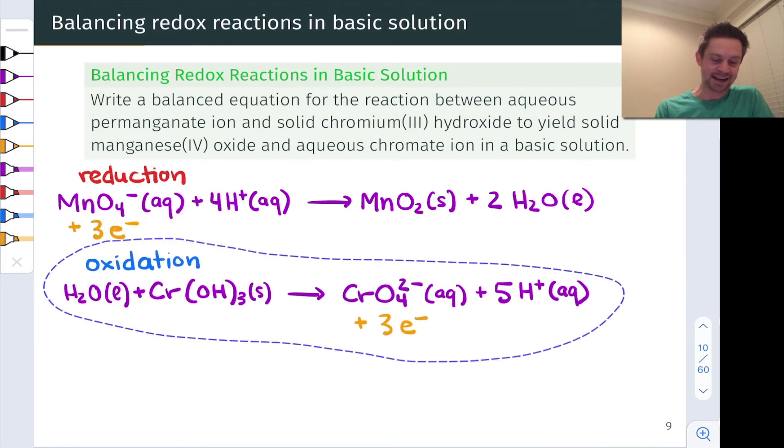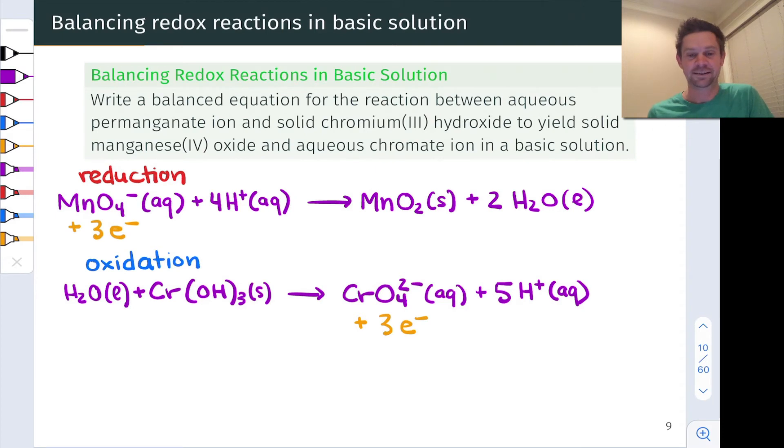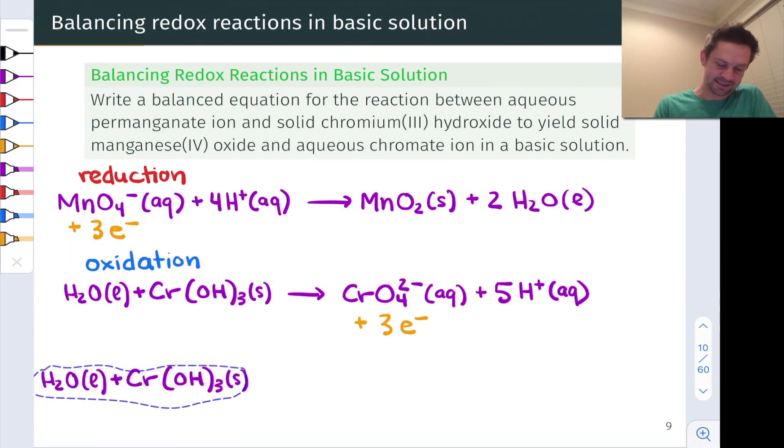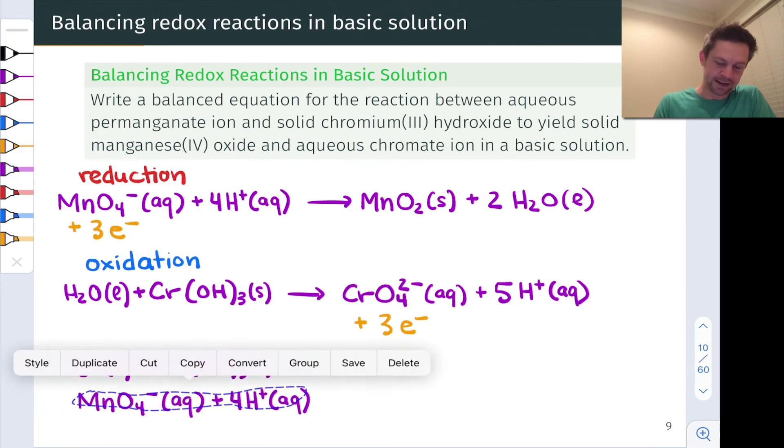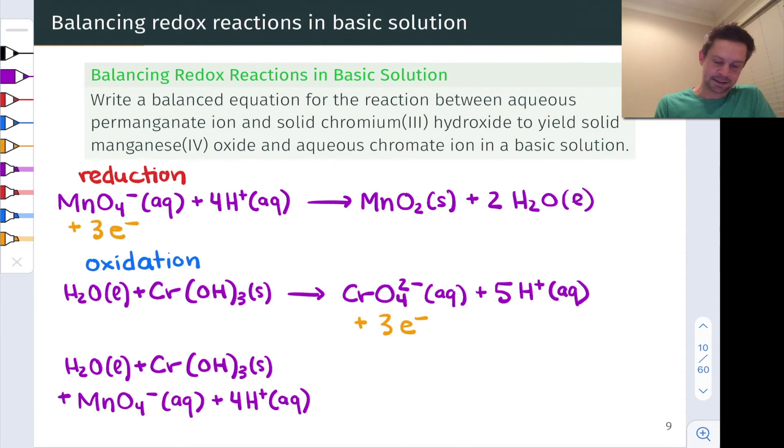And when we do that, we end up with, you know what, let's take advantage of copy and paste for this because we can. We can simply copy down these guys. And below those guys, we can add the permanganate reactants here. So here's our full set of reactants. Draw an arrow. And on the right-hand side, we're going to add the products, copy and paste.